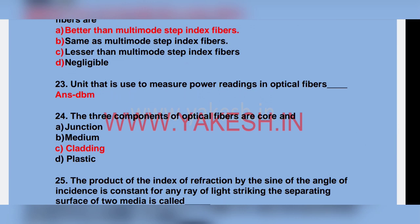The unit used to measure power reading in optical fiber: dBm. The three components of optical fiber are core and cladding. Option C.